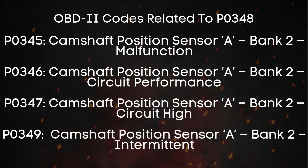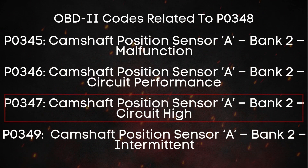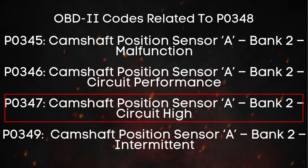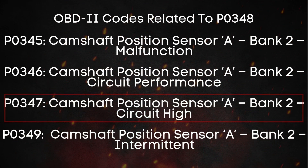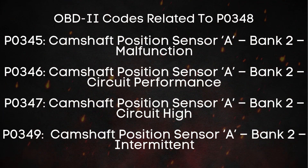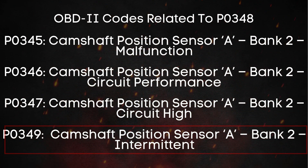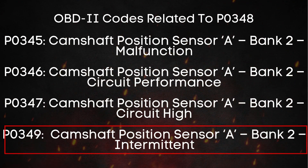On the flip side, you might see P0347, which is intake camshaft position sensor for bank 2 circuit low. This usually indicates that the voltage in the sensor signal is too low, and it could be caused by a dying sensor, damaged wiring, or corroded connections. And finally, there's P0349, which stands for intake camshaft position sensor for bank 2 intermittent, meaning the signal is cutting in and out.